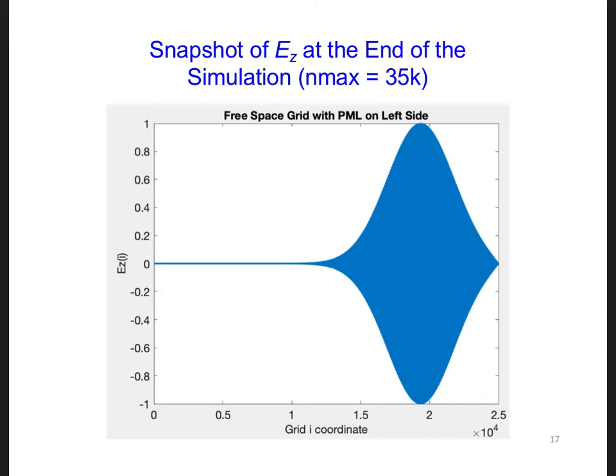After increasing nmax to 35,000, I see this at the end of the simulation. Now it looks like there was enough time for the pulse to propagate all the way into the PML.